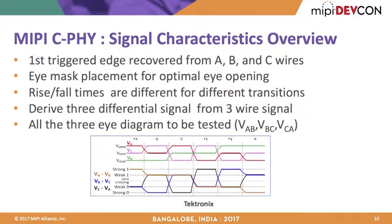C-PHY represents a completely different paradigm compared to D-PHY's NRZ differential signaling. C-PHY is a three-wire, three-state signal. Out of the three wires, two take voltage transitions in opposite directions while the third transitions to a mid-level. This voltage transition pattern ensures a clock boundary is embedded in every symbol. Not all learnings from NRZ technology are directly applicable to C-PHY — it is a fundamentally different approach.